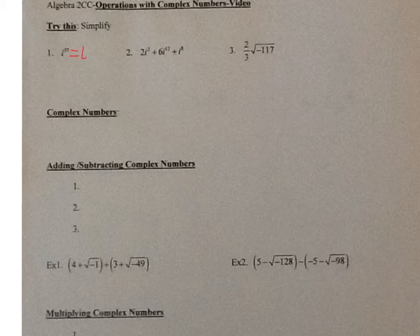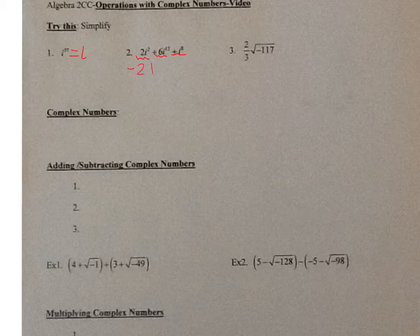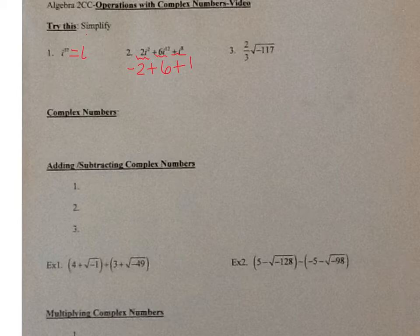Now let's do 2i squared plus 6i to the 12th plus i to the 8th. You're going to do each one of these separately — you can't plug the whole thing in at one time. So 2 times i part of i squared gives negative 2. Plus 6 times i part of i to the 12th gives 6. Plus i part of i to the 8th gives 1. So negative 2 plus 6 plus 1 is 5.